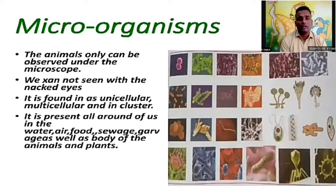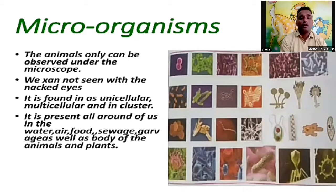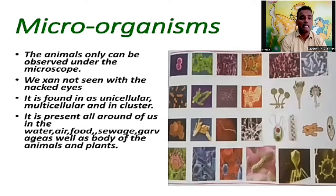An example of a unicellular organism is amoeba; the human body is an example of a multicellular organism. Microorganisms are present all around us — in water, air, food, garbage, sewage, as well as in the bodies of animals and plants. They can be everywhere around us — in water, in the air, in food, garbage, sewage, and in the bodies of living organisms.